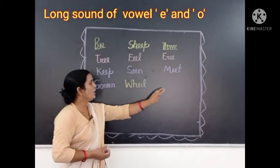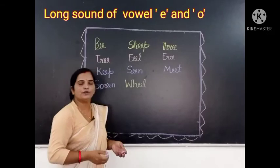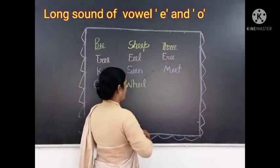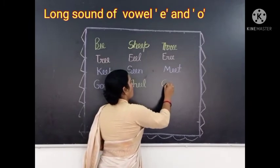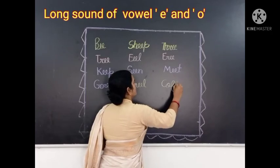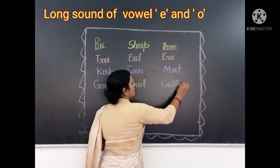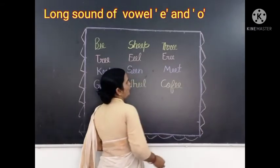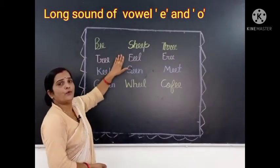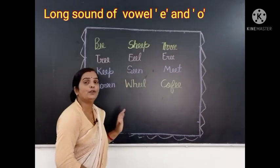And now we will write the next long sound of vowel E word: Coffee. C-O-double E. Coffee. Okay? These are words with the long sound of vowel E. Now we will write the long sound of vowel O words.